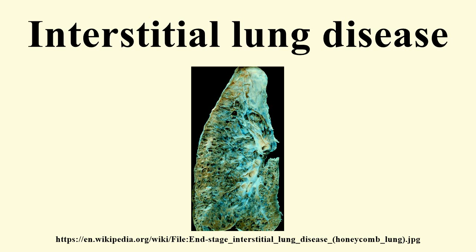Interstitial lung diseases can be classified according to radiologic patterns. Under the pattern of opacities — consolidation — acute causes include alveolar hemorrhage syndromes, acute eosinophilic pneumonia, acute interstitial pneumonia, and cryptogenic organizing pneumonia. Chronic causes include chronic eosinophilic pneumonia, cryptogenic organizing pneumonia, lymphoproliferative disorders, pulmonary alveolar proteinosis, and sarcoidosis.